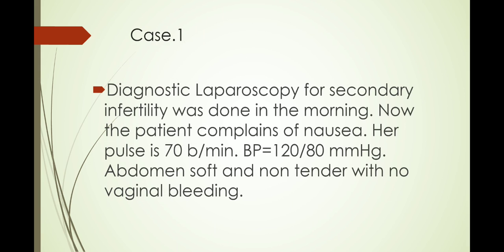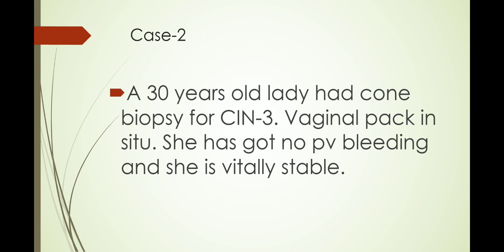Case number one: a diagnostic laparoscopy for secondary infertility was done this morning. Now the patient complains of nausea. Her pulse is 70 beats per minute, BP is 120/80 mmHg, abdomen is soft and non-tender, and no vaginal bleeding. So quickly assess — this is laparoscopy done today, just a complaint of nausea, abdomen soft, vitals normal. That is not very emergency, but the complaint of nausea is there.